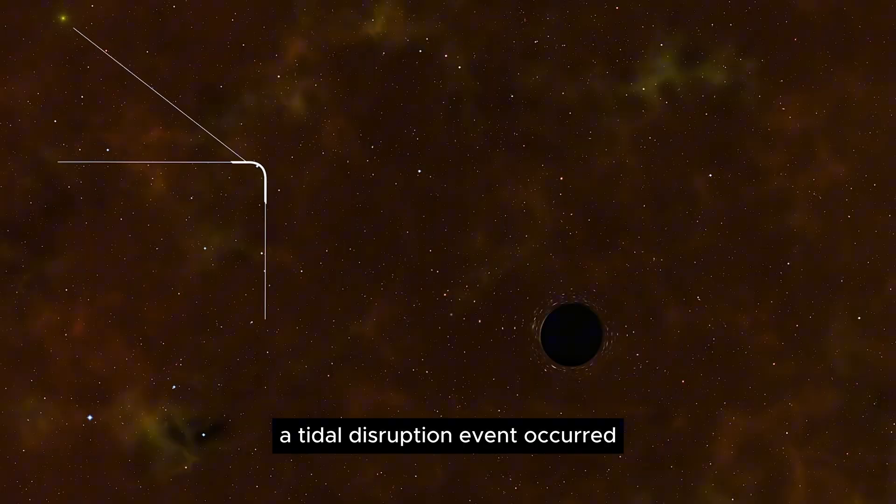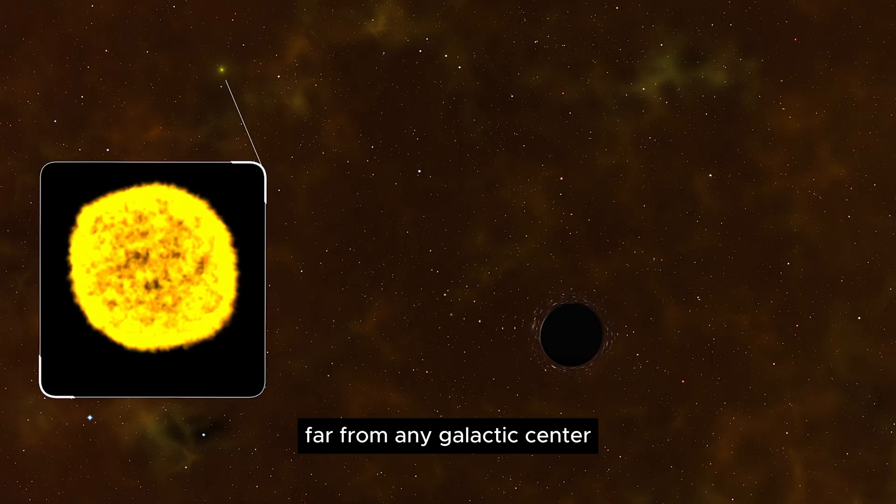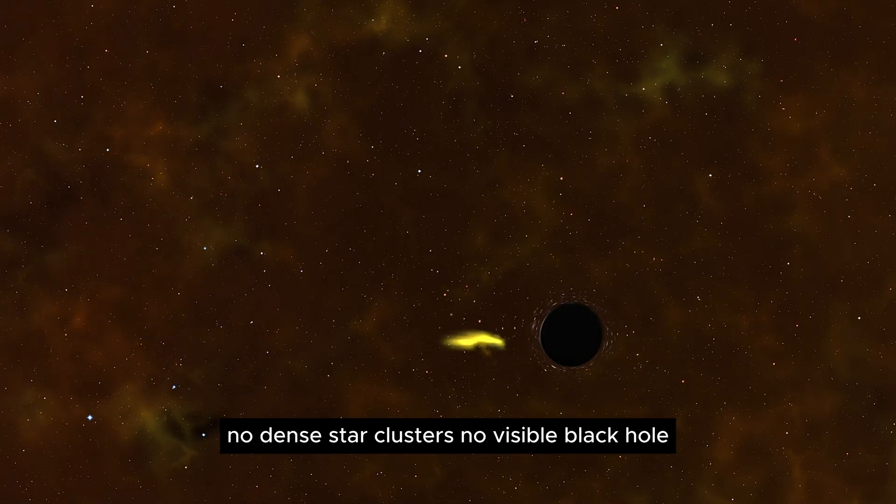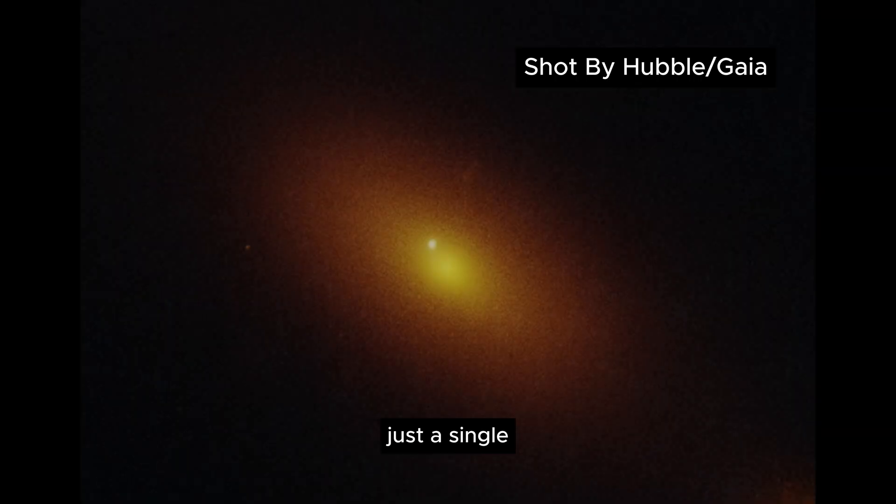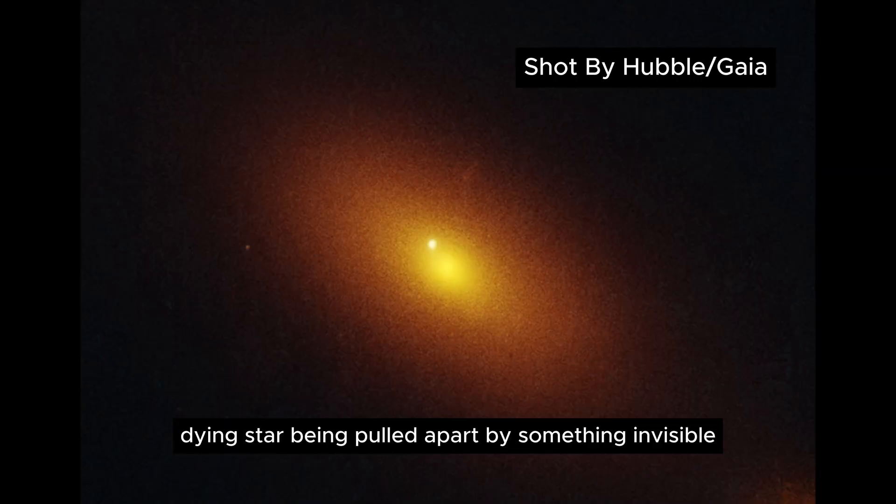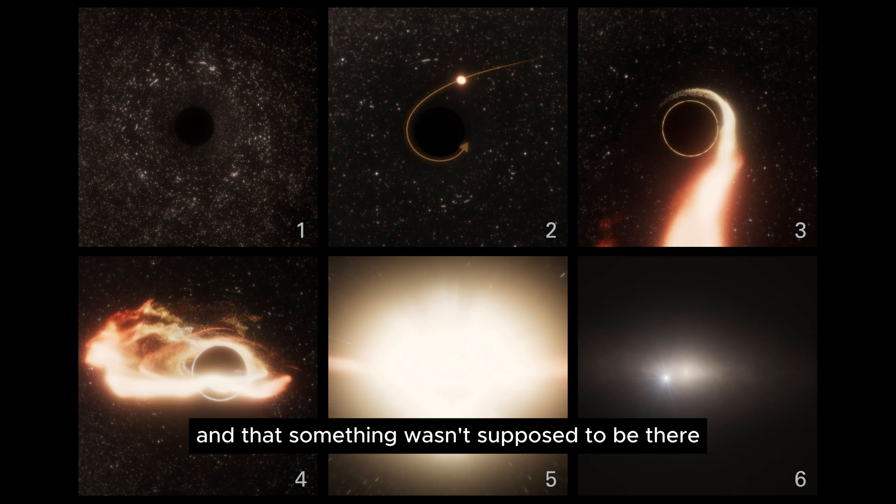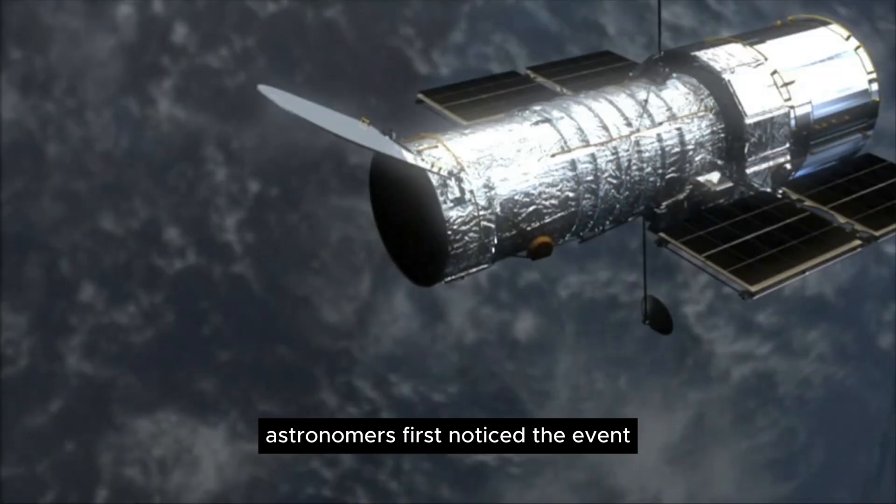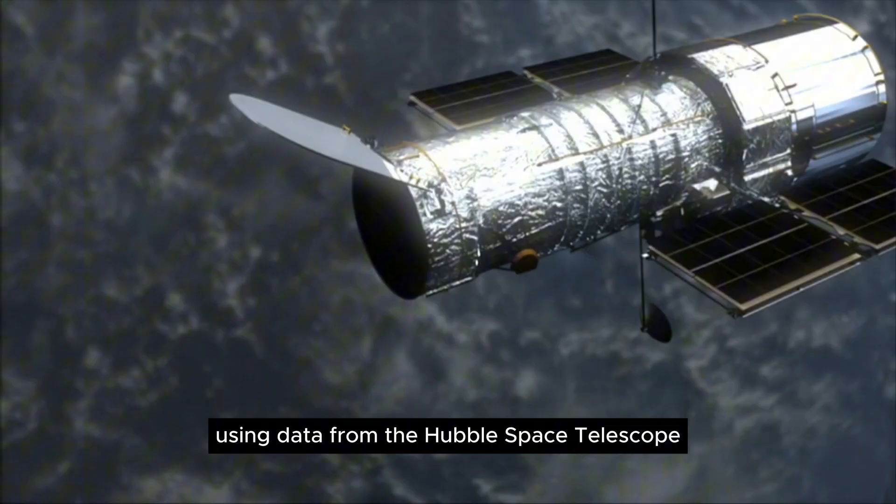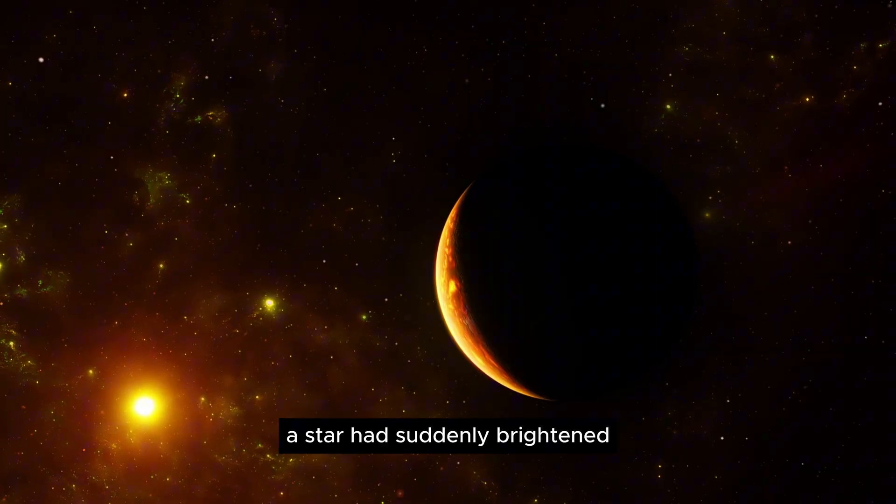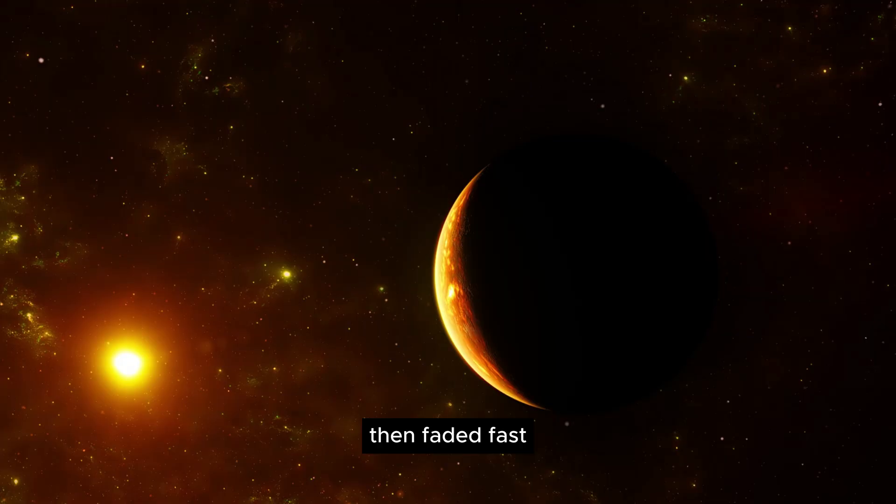A tidal disruption event occurred far from any galactic center. No dense star clusters. No visible black hole. Just a single dying star being pulled apart by something invisible. And that something wasn't supposed to be there. Astronomers first noticed the event using data from the Hubble Space Telescope. A star had suddenly brightened, then faded fast.